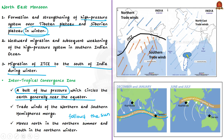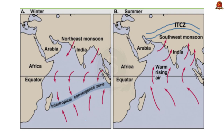During summer, the sun's position is apparently over the tropic of Cancer, resulting in a low pressure system over central Asia. Pressure over the Indian Ocean is sufficiently high due to differential heating of land and water — land heats and cools faster than water. So during summer, the heat of the land is higher than the ocean, creating high pressure over the ocean and low pressure over land. Since wind flows from high to low pressure, in summer winds flow from ocean to the landmass, resulting in the southwest monsoon.